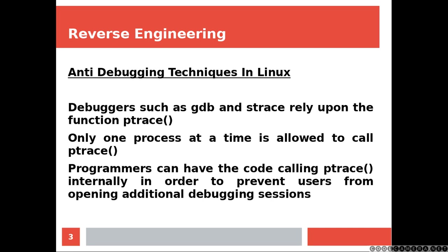Debuggers such as GDB and S-Trace rely upon the function P-Trace. Only one process at a time is allowed to call P-Trace. Programmers can have the code calling P-Trace internally in order to prevent users from opening additional debugging sessions.